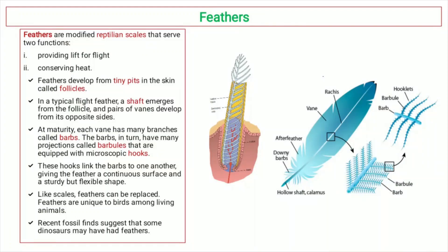In this video, we will discuss the structure of feathers. Feathers emerge from the skin, and among living animals, feathers are unique to birds. Modifications in the reptilian scales might have resulted in the evolution of feathers in birds.